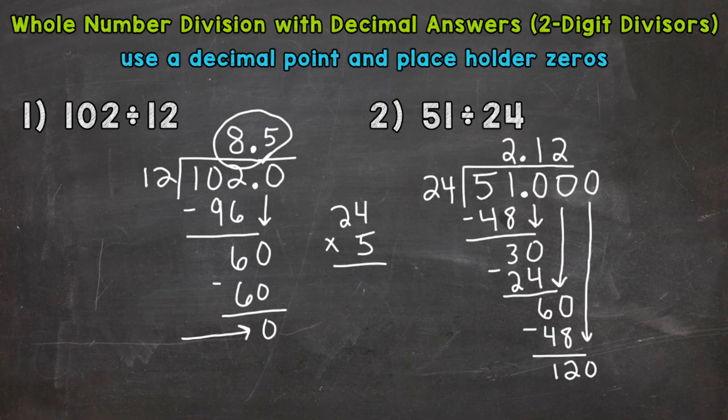5 times 4 is 20. 5 times 2 is 10, plus 2 is 12. So that hits 120 exactly. So 5 whole groups of 24 out of 120.